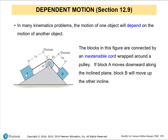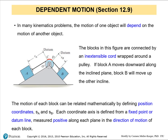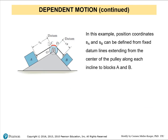In this example, the blocks in the figure are attached by an inextensible cord wrapped around an ideal pulley. An ideal pulley does not have any friction. When block A moves, block B will also be in motion. We can relate the motion of each block mathematically by defining positions between the block and the pulley. We establish a datum, or reference point, which is a fixed point, and measure each coordinate as a positive value from that datum. In this example, we are measuring SA from this fixed position.